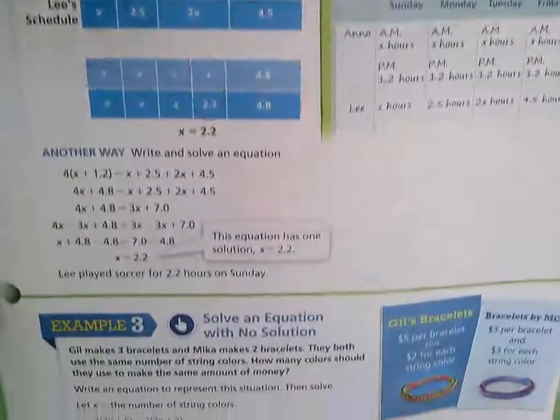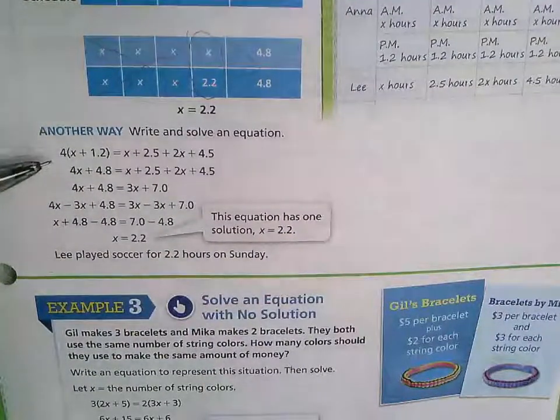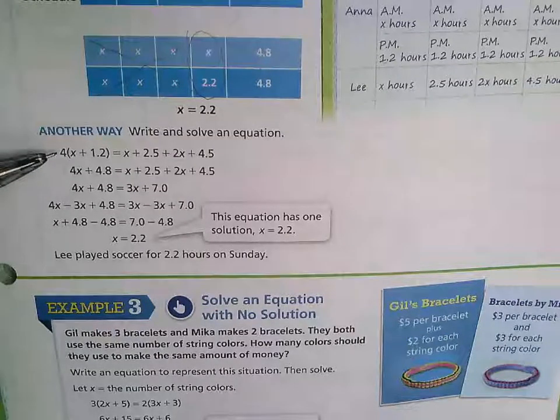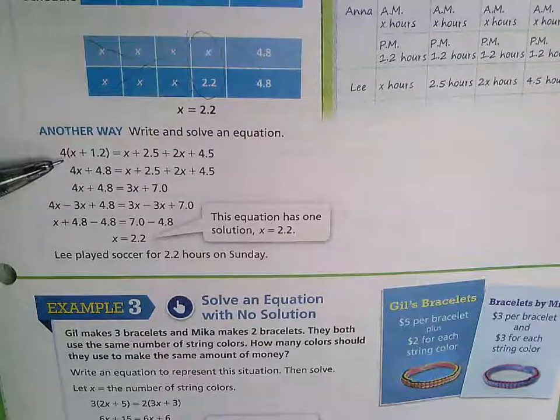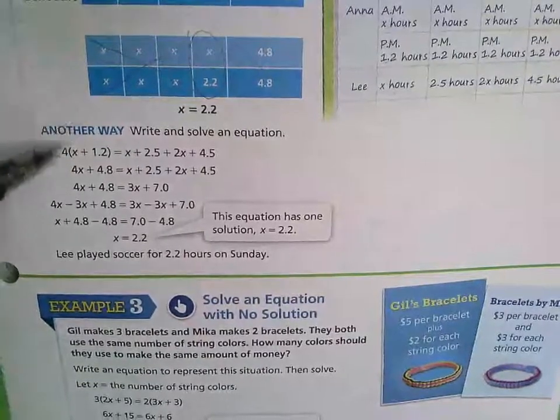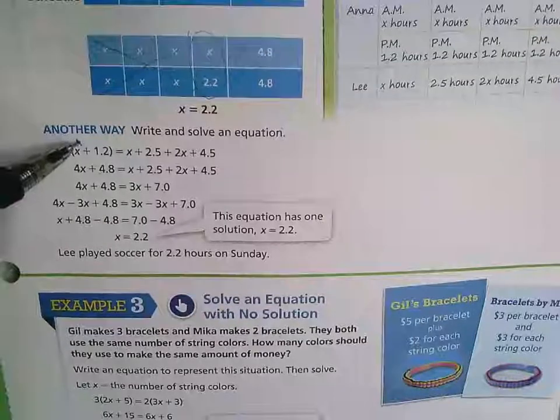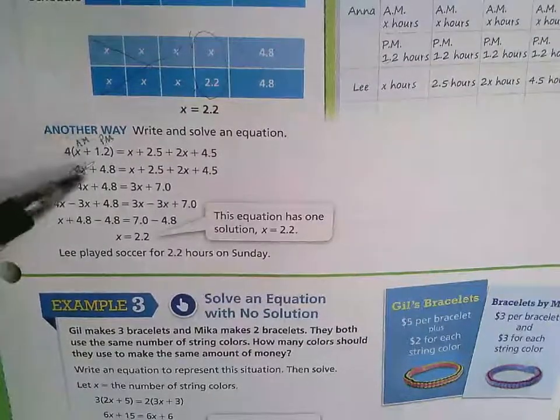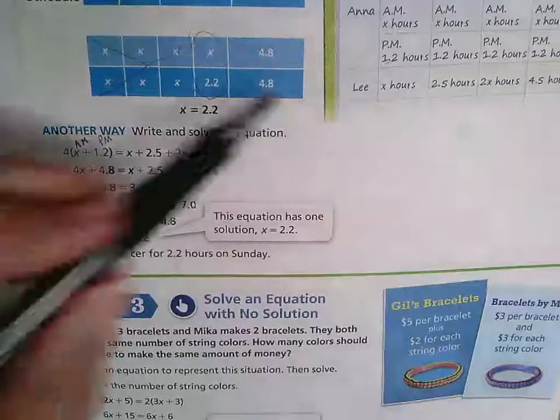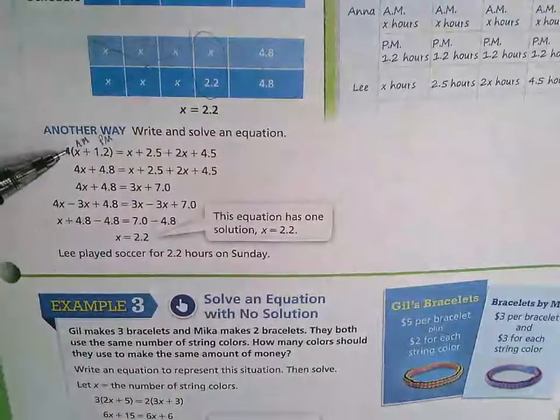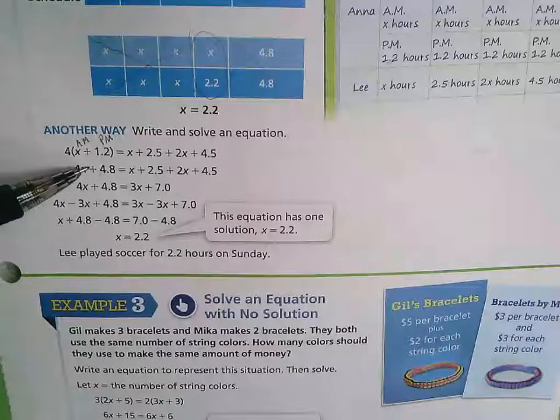And down here, you can see they do it using the distributive property for Anna, because she is playing the exact same amount for four days. So this was the number of hours that she played in the morning. And this was the number of hours that she played in the afternoon, based on the chart over here. And then they multiplied that by four using the distributive property.